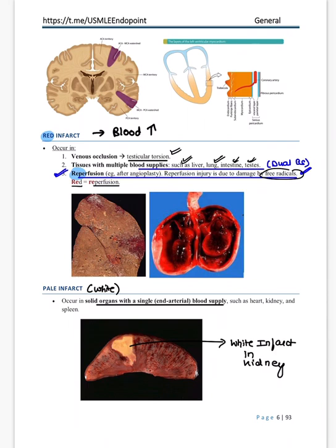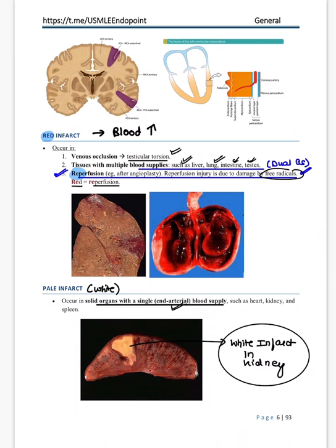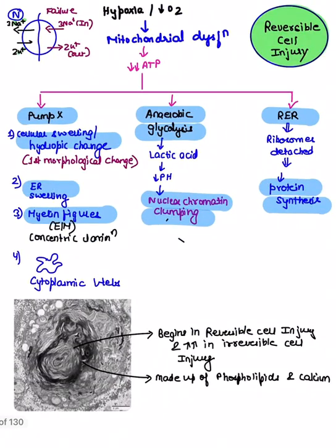Pale infarct: no blood, appears white — due to end-arterial supply without dual supply. A classical Robbins image of white infarct is seen in the kidney. Red = reperfusion; pale = end-arterial supply.